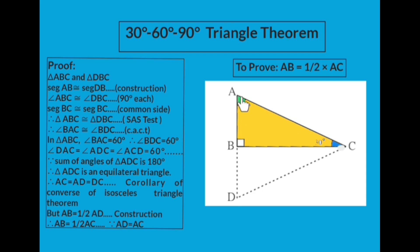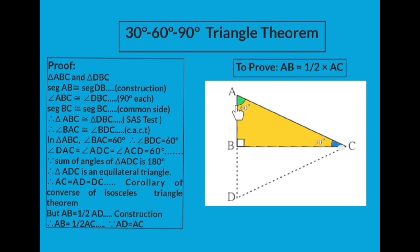Since triangle ACD is an equilateral triangle, all three sides — AD, AC, and DC — are equal in measure. So AC equals AD equals DC, by the corollary of the converse of the isosceles triangle theorem. We know by construction that AB is half of AD. Since AD equals AC, we can replace AD with AC, giving us AB equals half of AC. This completes the proof of Part 1.